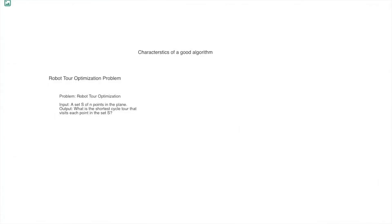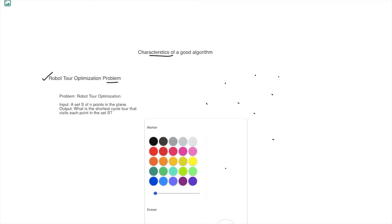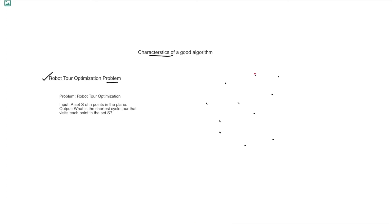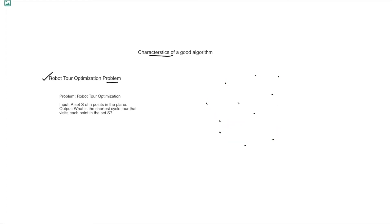Now let's look at the characteristics of good algorithms. Consider a robot tour optimization problem from a famous book. We have different points, and we want to take a cyclic tour — start from some point, traverse through all the points, and return to the same starting point again.